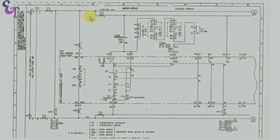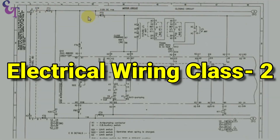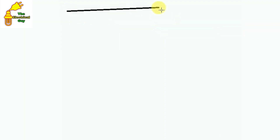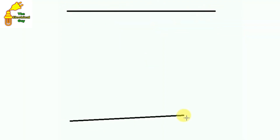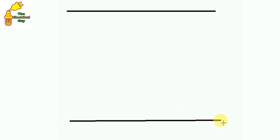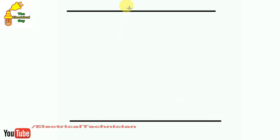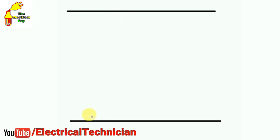Today's video is electrical wiring class 2. An electrical drawing is always made between two lines: one line is our phase line and the second line is our neutral line. So this is our phase line and this one is the neutral line.